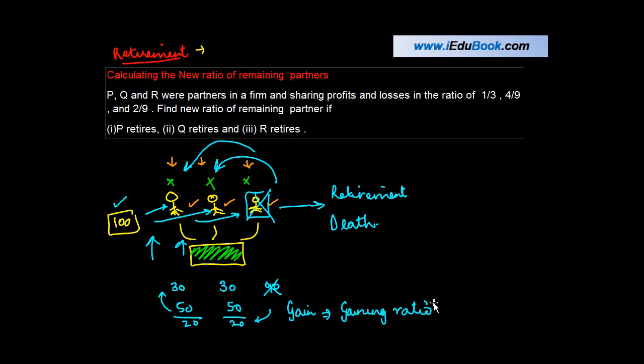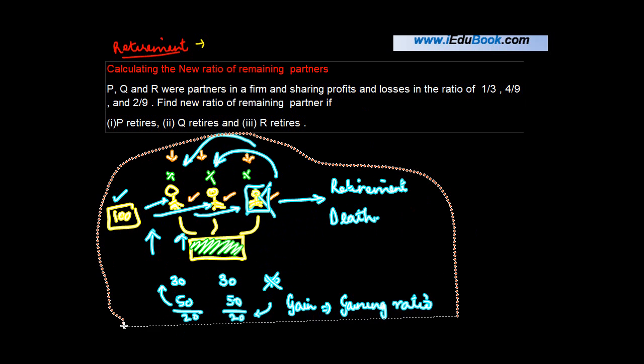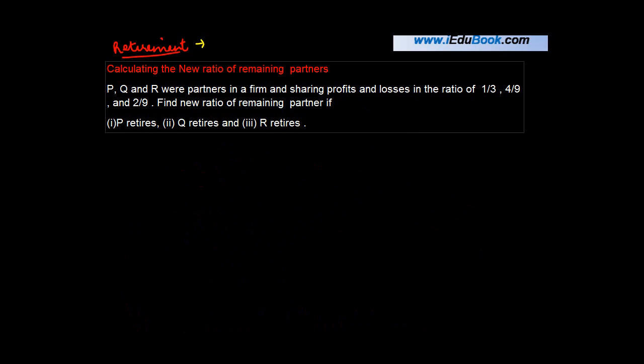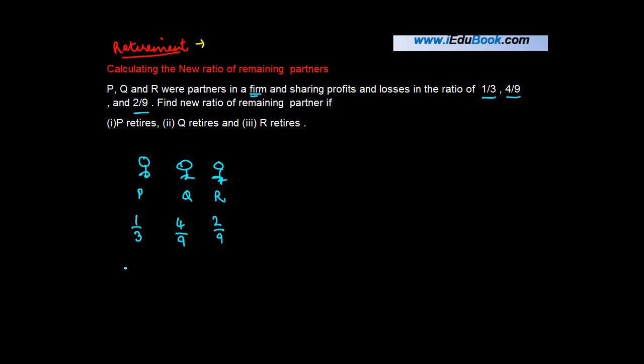P, Q and R were partners in a firm sharing profits and losses in the ratio of 1/3, 4/9, and 2/9. So P was getting 1/3 of the profits, Q was getting 4/9 of the profits, and R was getting 2/9 of the total profits. Find the new ratio of the remaining partners if P retires.